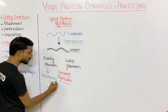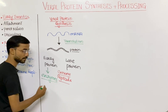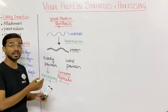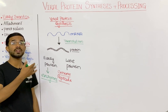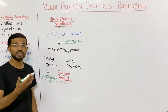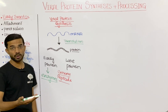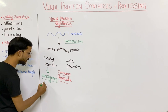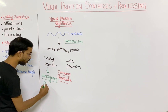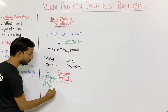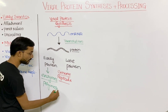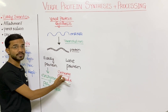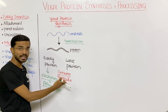In the early proteins, you mostly see the synthesis of enzymes, because enzymes are actually proteins. Specifically, those enzymes are helpful in the replication of the genome material of the virion — mostly the polymerase that synthesizes the virus genome.